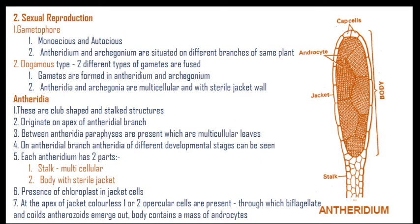In sexual reproduction, gametophores are developed. Gametophores are of two types: monoecious or autoecious. The second type has antheridium and archegonium situated on different branches of the same plant. There is also an oogamous type of sexual reproduction, meaning two different types of gametes are present — gametes formed in the antheridium and archegonium, which are multicellular with a sterile jacket wall.